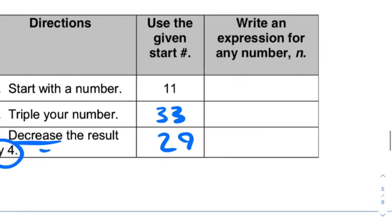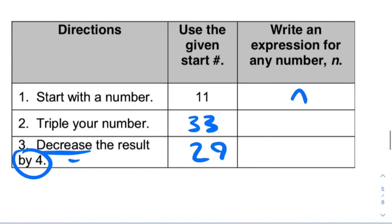Now let's do the same thing for n. We start with n, we triple the result to get 3n, three times n, and now we decrease by four, so we're going to have 3n minus four, and that will be our final answer.